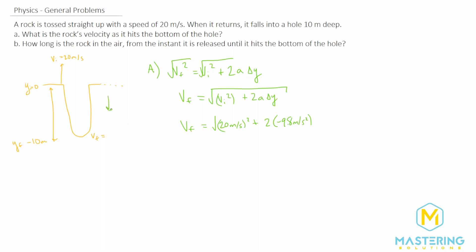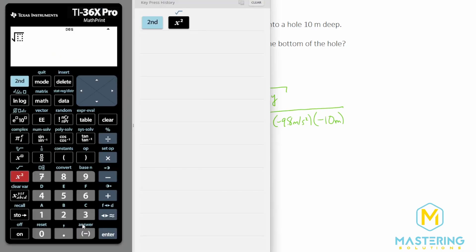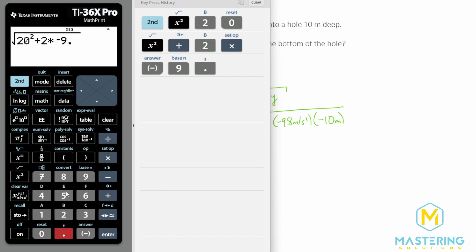And then we're going to have a delta y of what we talked about already in negative 10 meters. So we'll take the square root of a 20 squared plus 2 times a negative 9.8 times a negative 10. So that gives us 24.41. So 24.41.